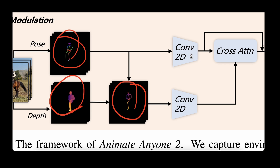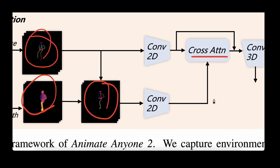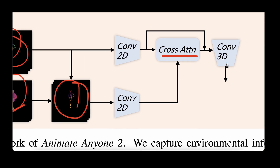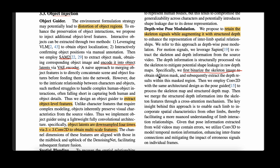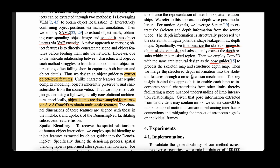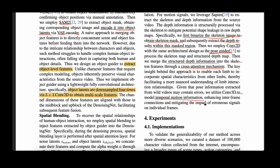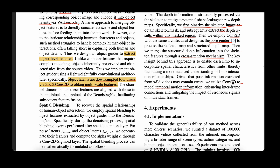They pass the pose through a 2D convolution network and merge it with depth information using a cross-attention mechanism. The merged output is passed through a 3D convolution, producing the pose-modulated output. They first binarize the skeletal image to obtain the skeletal mask, extract depth within those mask regions, and use 2D convolution. The architecture resembles the pose guider, and 3D convolution is used to model temporal motion information.